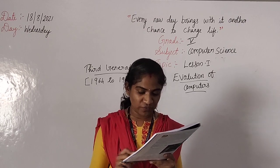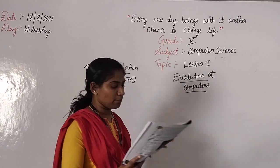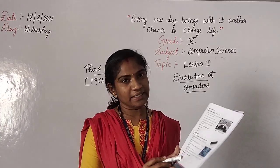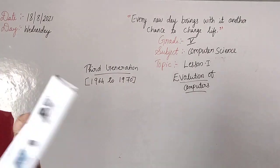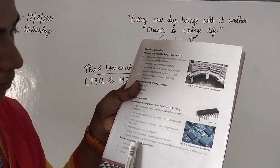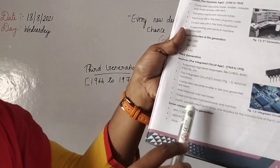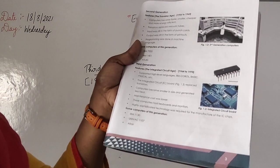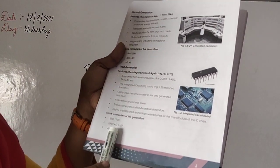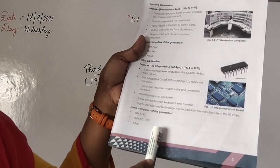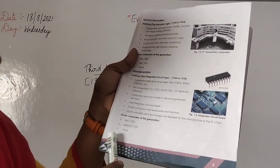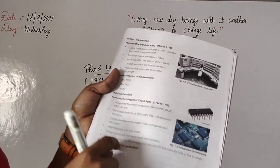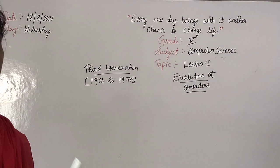Some computers of this generation: in third generation, computers are IBM 1130, then Univac 1107, and others. These are some computers of the third generation. Now turn to the next page — next we have fourth generation.